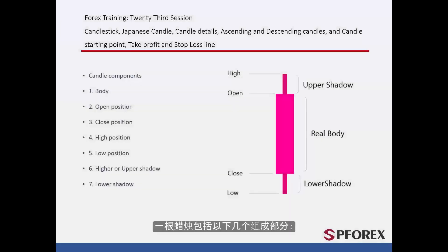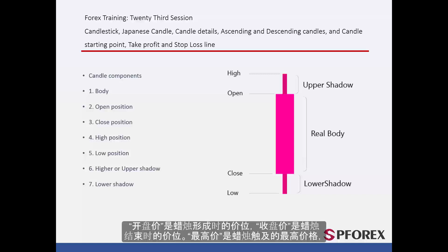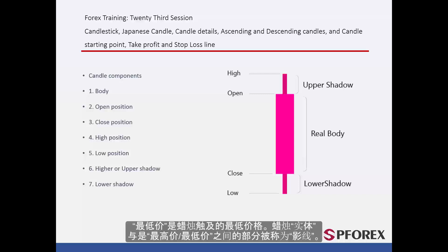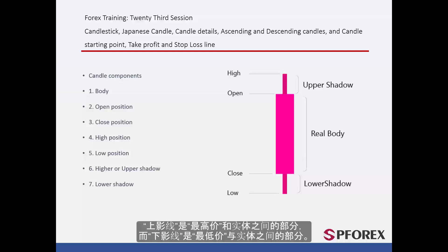Different parts of a Candlestick: a candle has a main body, also known as the real body. Open is the price at which the candle forms; Close is the price at which the candle closes. High means the highest amount the candle reached, and Low is the lowest price the candle touched. The area between the body and the high and low prices is called the shadow. The upper shadow is between the high and the main body, while the lower shadow is between the main body and the low.